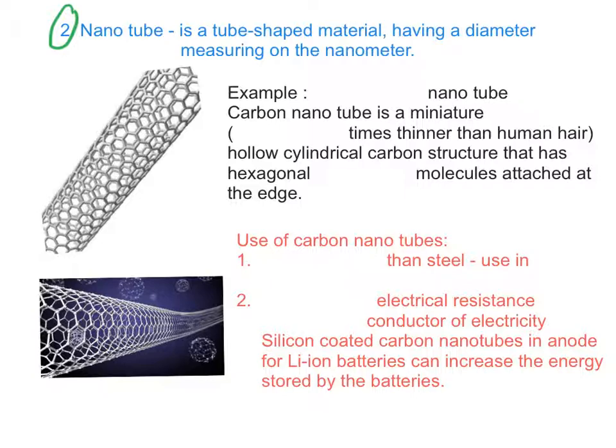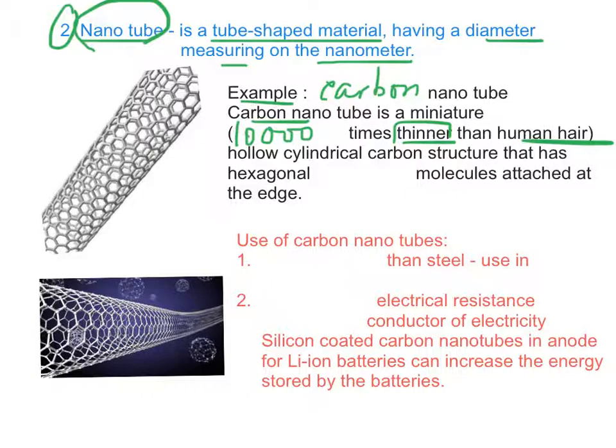The second form is nanotubes. A nanotube is a tube-shaped material having a diameter measuring on the nanometer scale. Examples of nanotubes is carbon nanotubes - a miniature structure which is 10,000 times thinner than human hair. It's a hollow cylindrical carbon structure that has hexagonal graphite molecules attached at the edge.